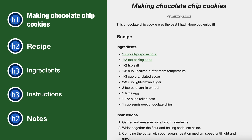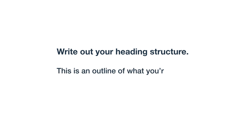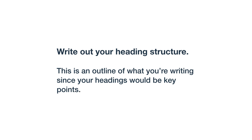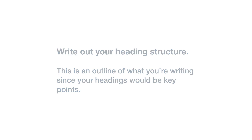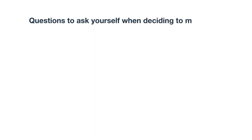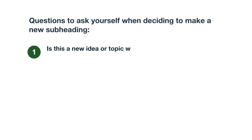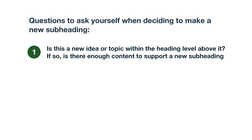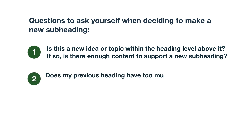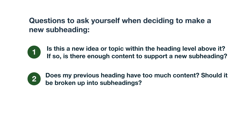Now let's go over the tips for creating a heading structure. Before you write your content, write out your heading structure. This should basically be an outline of what you're writing, since your headings would be key points you want to cover. Most likely, you'll end up rewording some headings and removing or adding some too, and that's okay. When writing your heading outline, here are questions to help you know when to make a new subheading. First, is this a new idea or topic within the heading level above it? If so, is there enough content to support a new subheading? You usually want 1–3 paragraphs under a heading. Second, does my previous heading have too much content? Should it be broken up into subheadings? You want to avoid walls of text. If there are multiple topics in one section of text, a heading can be a great way to break up that wall.